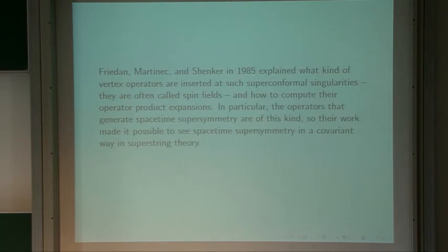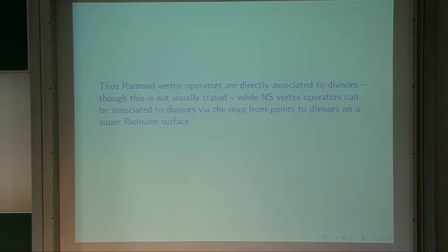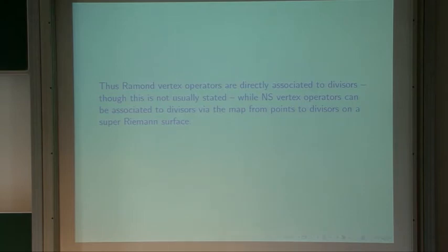What didn't become well known is the interpretation in terms of supergeometry. The natural super interpretation of a Ramond vertex operator is that it's inserted at this kind of divisor. The operators that generate space-time supersymmetry come from the Ramond sector, so the work of Friedan et al. made it possible to see space-time supersymmetry in a covariant way in superstring theory. Ramond vertex operators are associated to divisors, and Neveu-Schwarz vertex operators can be associated to divisors via the map from points to divisors — in a sense both are associated to divisors, which is why there's an operator-state correspondence for each.